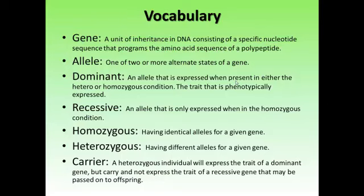You have two copies of every gene, so you have two alleles. If eye color only required one gene, you could have two different alleles — one dominant and one recessive. Say you have one brown eye gene and one blue eye gene; your eyes would be brown. A dominant gene is expressed over a recessive gene, and recessive genes are expressed only when all alleles for that gene are recessive. The dominant gene is expressed whether all genes are dominant or just one — that's what makes it dominant.